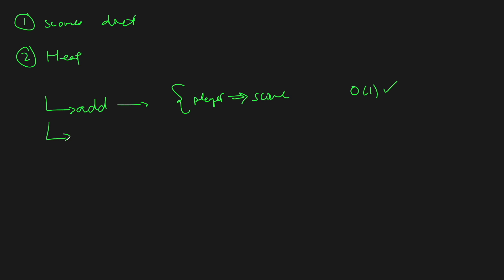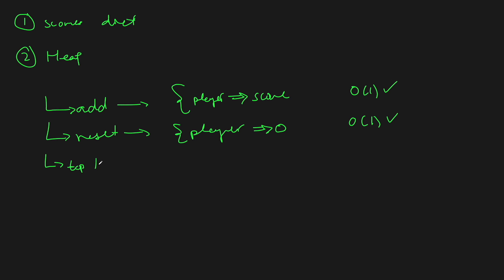The second method is reset. We just set that player's score back to zero — constant time, no problem. The last thing is top K, where we actually need to build a heap out of all of the scores. So we build the heap and then get the top K.